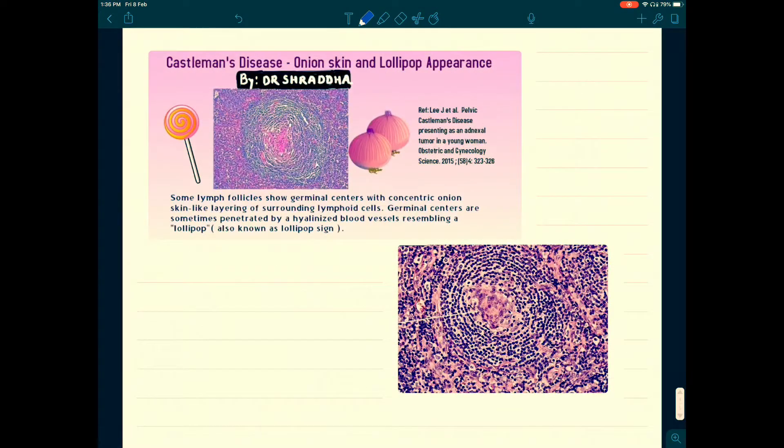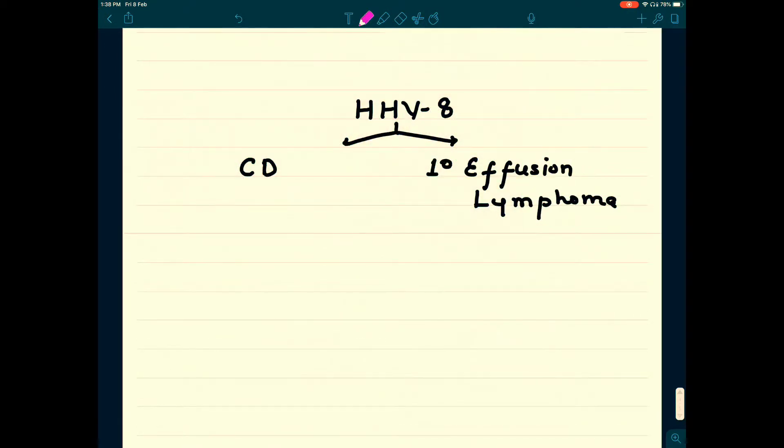Three names for the same disease: Castleman disease, giant lymph node hyperplasia, and AFH. What you see here is the onion skin or lollipop appearance of the lymph node. Second lesion showing germinal center which has hyalinized blood vessels, surrounded by lots of lymphoid tissue in concentric manner giving rise to lollipop appearance.